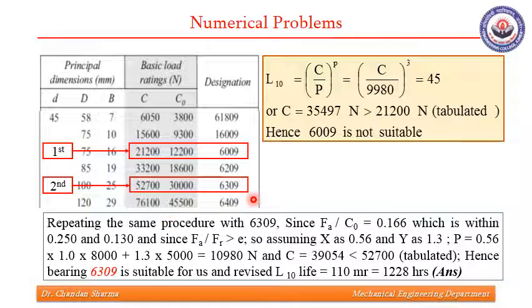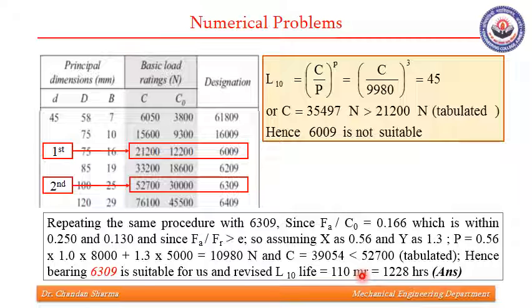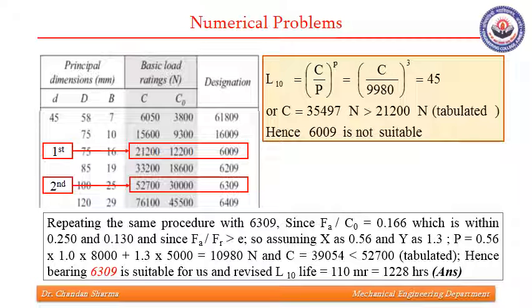Further, since we got C calculated as 39054 but the actual C tabulated is 52700, for this revised C we again find L10 life, which comes out to be 110 million revolutions — earlier it was 45 million revolutions. Converting into hours gives 1228 hours, whereas we only required the bearing for 500 hours. So the bearing will definitely cover the entire useful life. This numerical demonstrates the selection procedure of rolling contact bearings, and this procedure is invariably used to select bearings from the catalog.